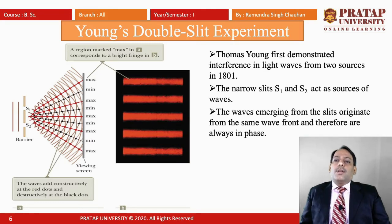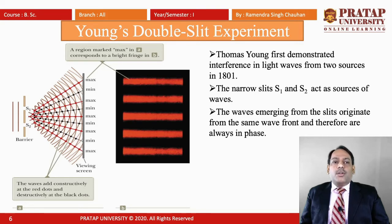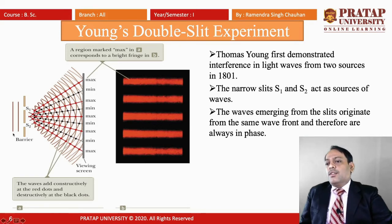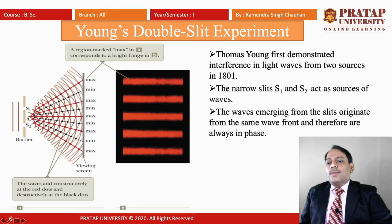Now we will talk about one experiment which is the basic or first experiment performed related to interference — that is Young's Double Slit Experiment. It was performed by Thomas Young, who demonstrated interference in light waves from two sources in 1801. Here we can see the setup. These are two slits S1 and S2, and this is a screen where we will observe the fringes. The slit width is very small for S1 and S2.